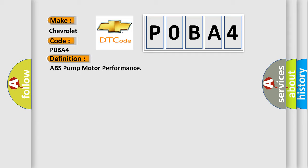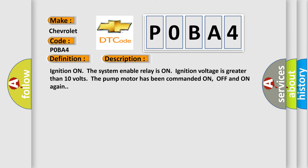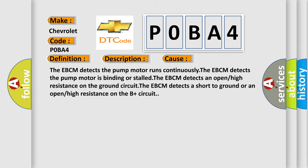Here is a short description of this DTC code. Ignition on — the system enable relay is on and ignition voltage is greater than 10 volts. The pump motor has been commanded on, off, and on again. This diagnostic error occurs most often in these cases: the EBCM detects the pump motor runs continuously; the EBCM detects the pump motor is binding or stalled; the EBCM detects an open or high resistance on the ground circuit; or the EBCM detects a short to ground or an open or high resistance on the B+ circuit.